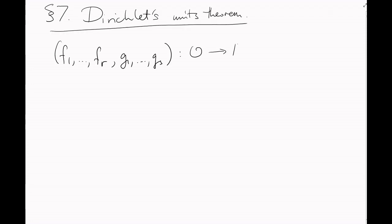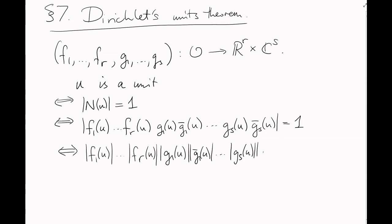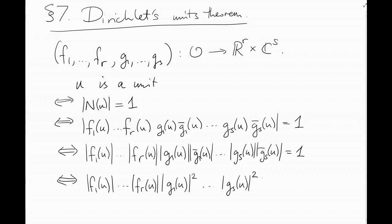A unit of O is an element U such that the absolute value of the norm of U is 1. Let's plug in our norm formula. Let's move the absolute values inside. And finally, I'm going to combine the imaginary embeddings with their conjugates. Mod G1 of U is equal to mod G1 bar of U and so on.